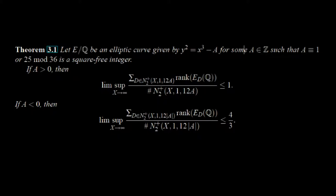The N2 plus in the denominator denotes the set of positive fundamental discriminants less than x and congruent to 1 mod 12a.